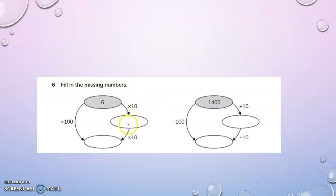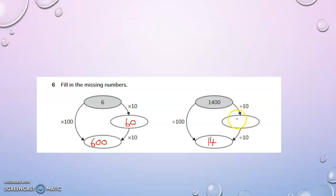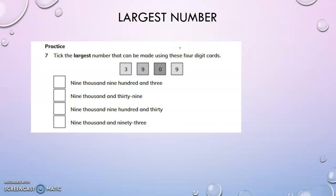Fill in the missing numbers. Six into ten is sixty. Sixty into ten is six hundred. Six into hundred is six hundred. Multiplying a number by hundred is equal to multiplying by ten two times. For division by hundred — one thousand four hundred divided by hundred: remove the two zeros to get fourteen. One thousand four hundred divided by ten: remove one zero to get one hundred and forty. One hundred and forty divided by ten: remove the zero to get fourteen. So dividing by hundred is equal to dividing by ten two times.